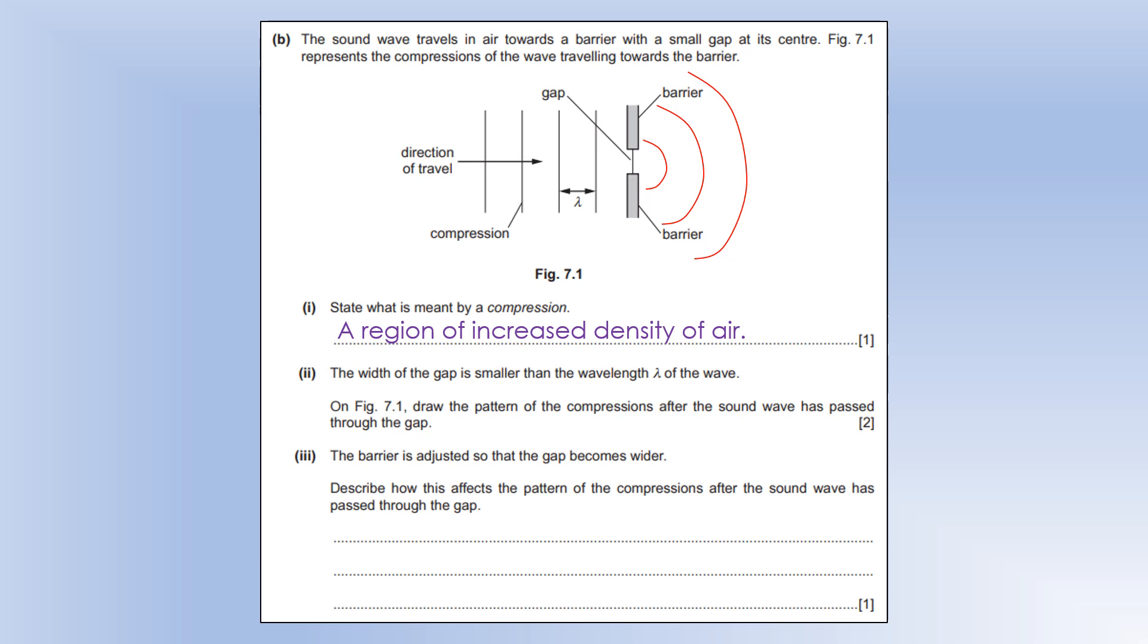The barrier is adjusted, so the gap becomes wider. Describe how this affects the pattern of compressions after the sound wave has passed through the gap. Well, diffraction is going to get less. So, the bigger the gap gets, the smaller the amount of diffraction gets.